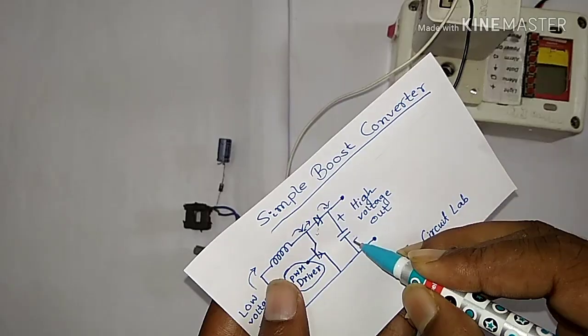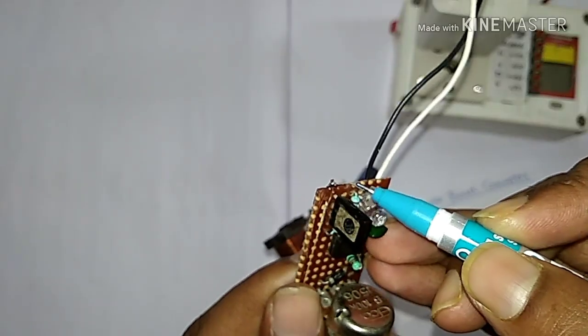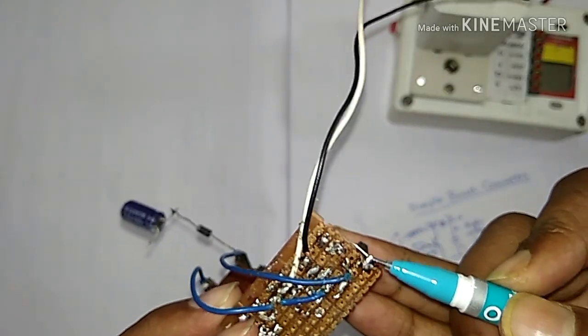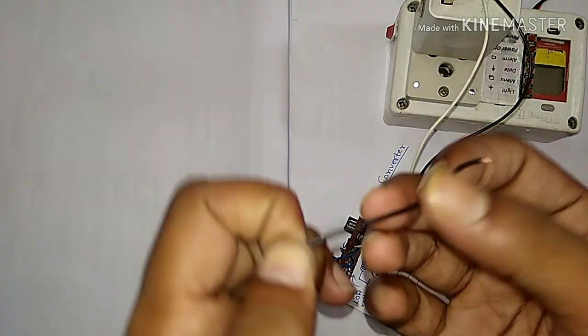And the final task is to make the ground connection. Since my transistor is already grounded, I have to ground only the capacitor with this black wire.